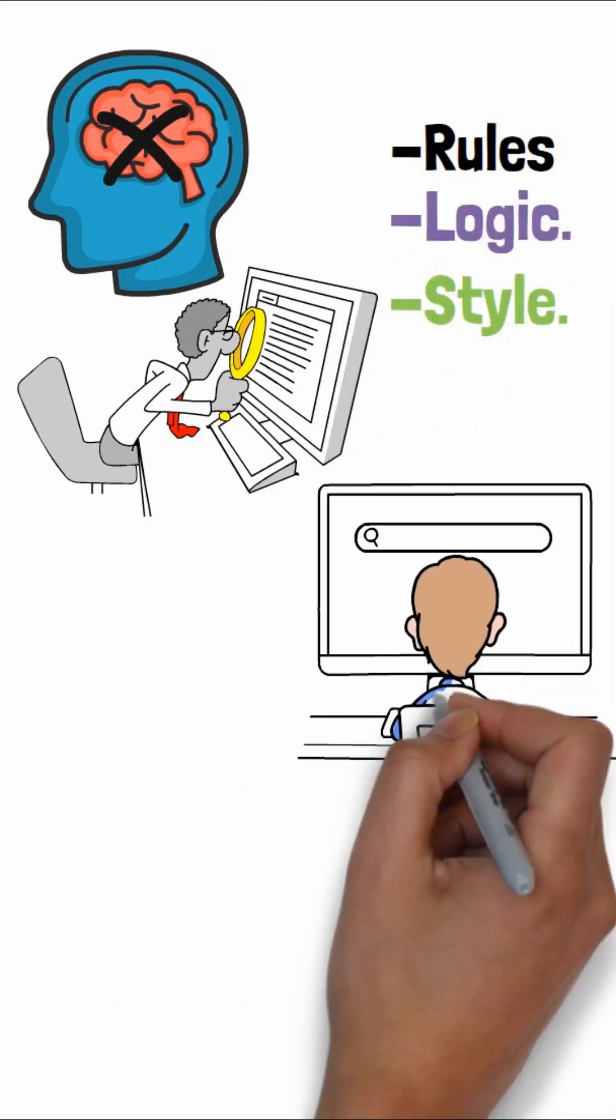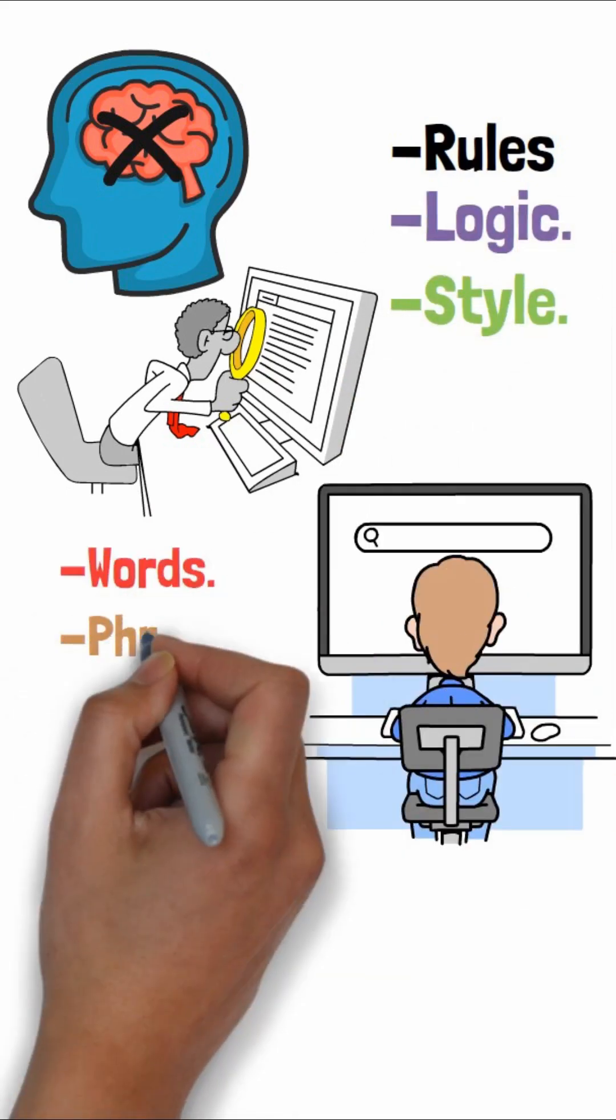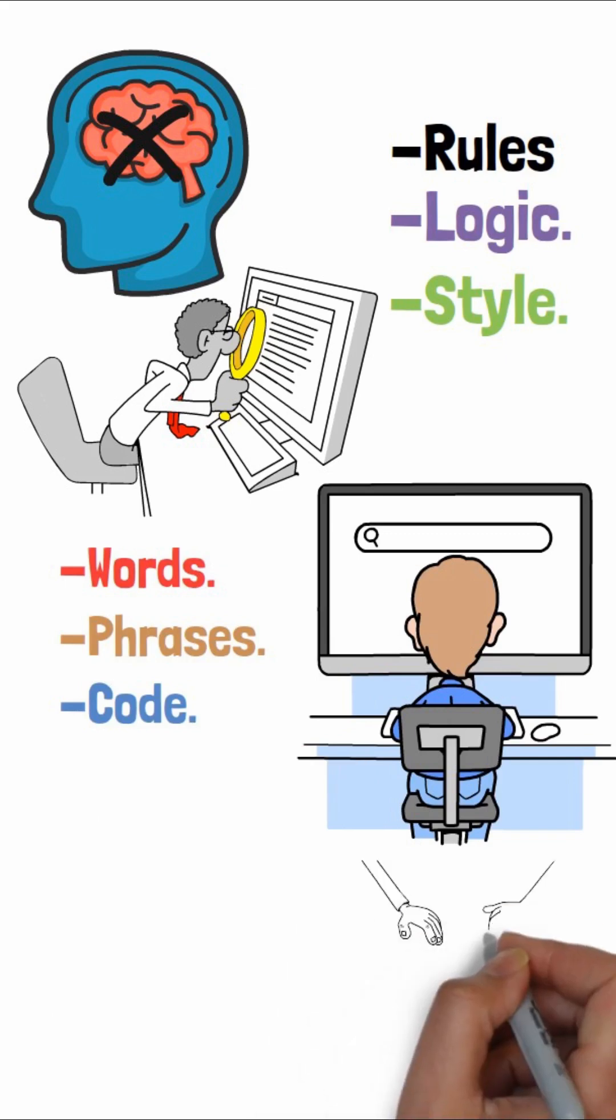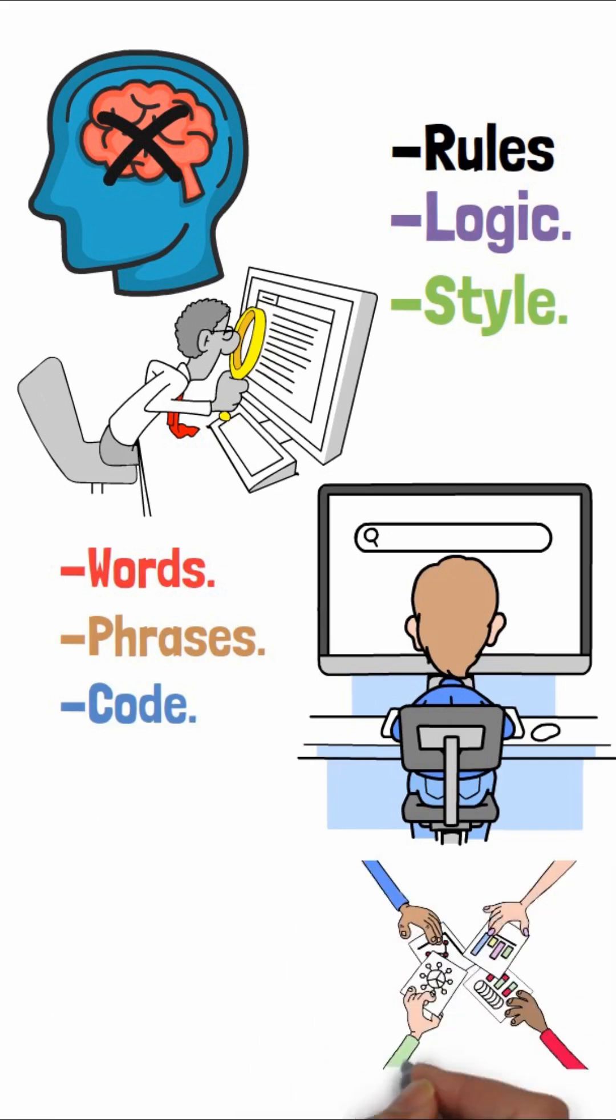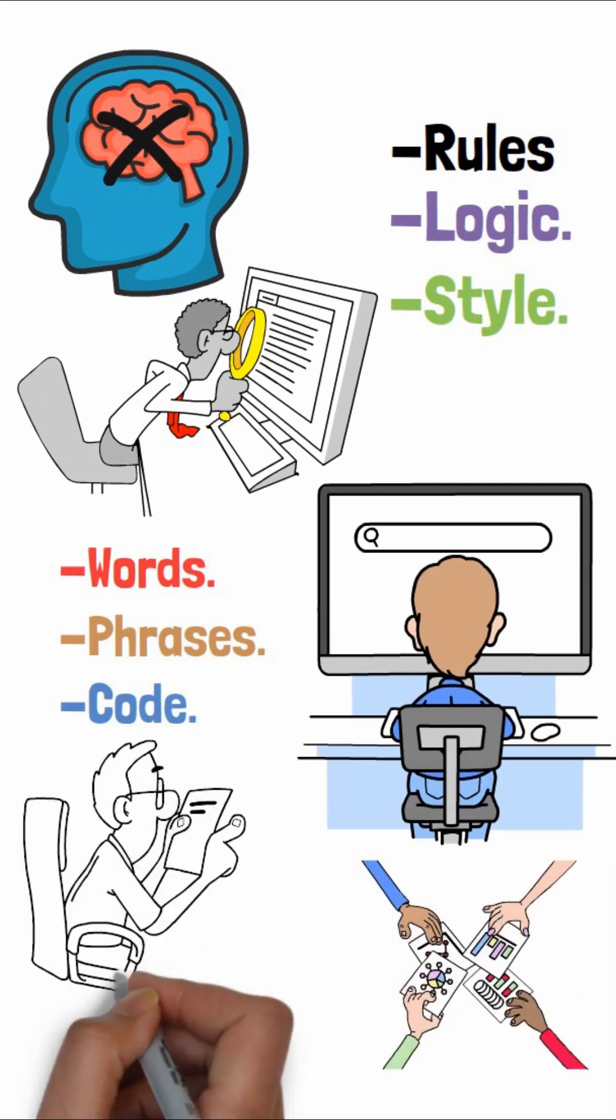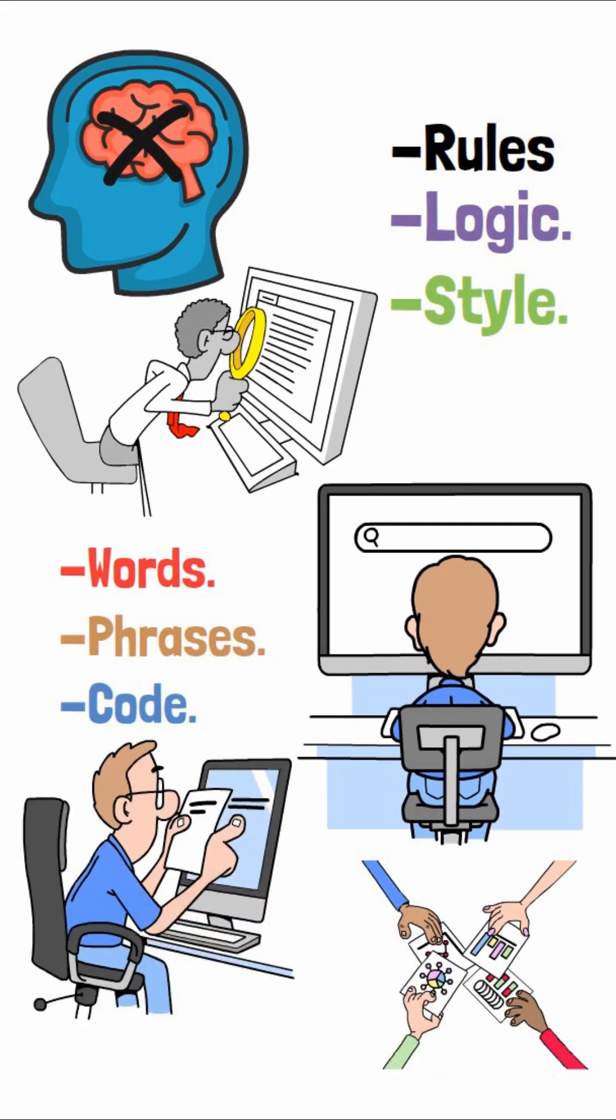When you give it a prompt, it predicts the most likely words, phrases, or code that should come next to fulfill your request. It's not retrieving an answer, it's generating a new one based on a deep statistical understanding.